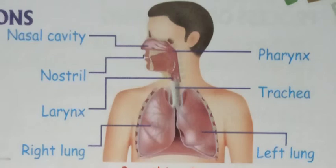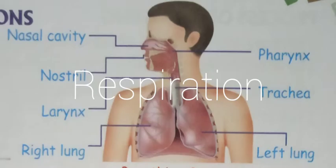Remember these parts of the respiratory system. Now, what is respiration? Respiration is a process by which an organism obtains energy from glucose by combining with oxygen, resulting in the release of carbon dioxide, water, and ATP.